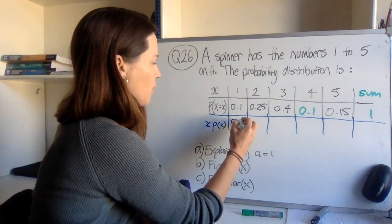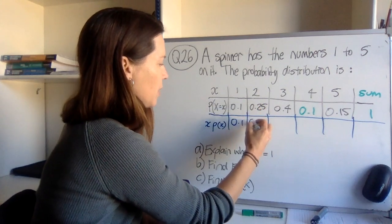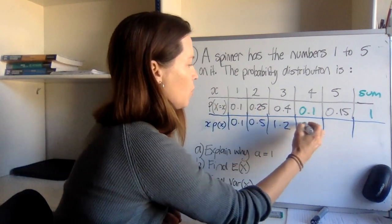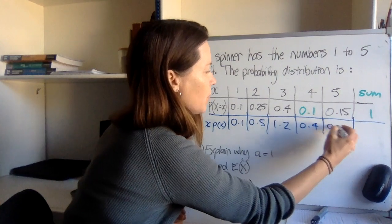So working our way along here, we've got 0.1, 2 multiplied by this is 0.5, 1.2, 0.4, 0.75.